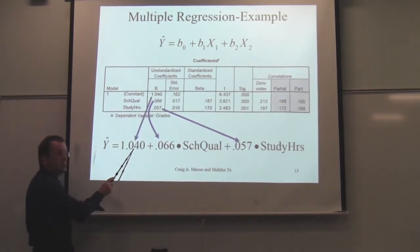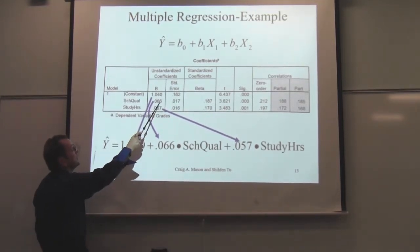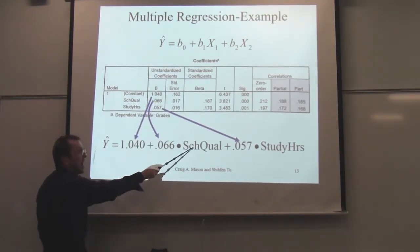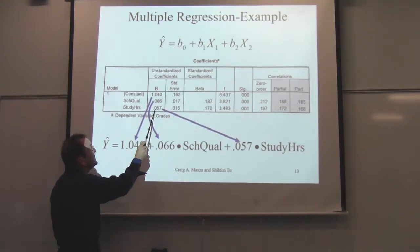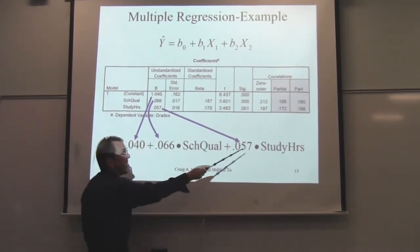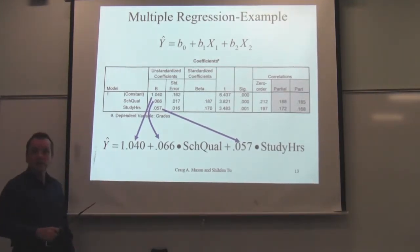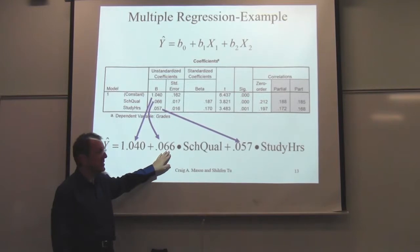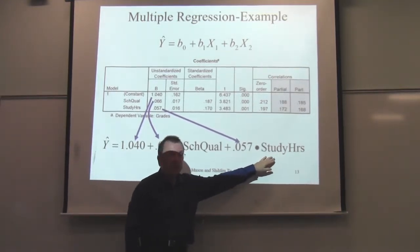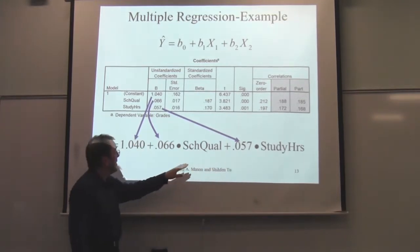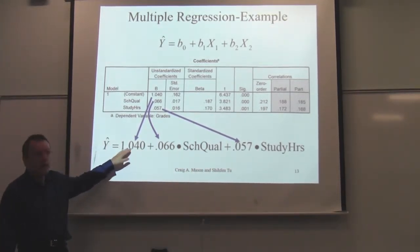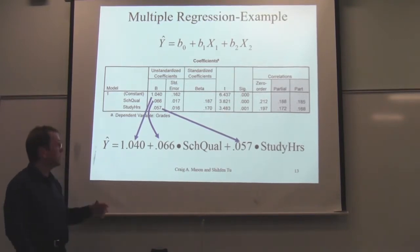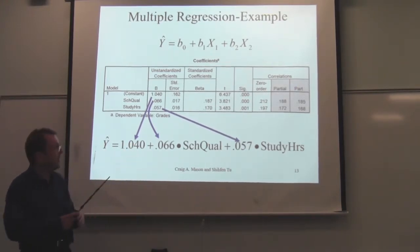So the regression equation is: 1.040 plus 0.066 times school quality, plus 0.057 times study hours. We plug in whatever the school quality rating is for a student, multiply by 0.066, plug in however many hours they studied, multiply by 0.057, add 1.04, and that gives us their predicted GPA — their predicted grades.